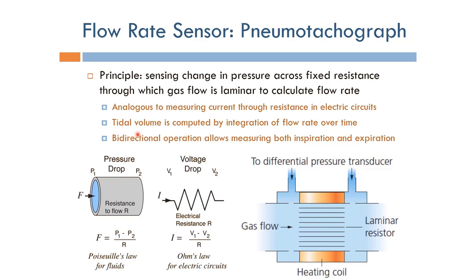The tidal volume can be computed by the integration of the flow rate over time. The flow rate is like the current, and the volume is equivalent to the charge. Whenever we would like to compute the charge, we just integrate the current.